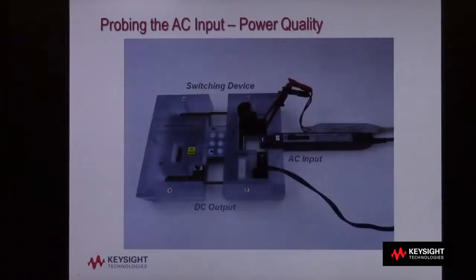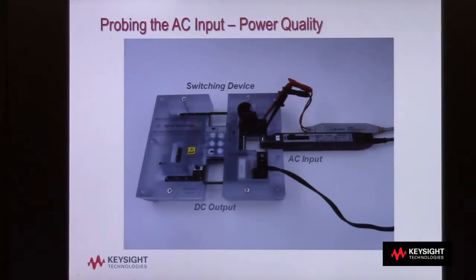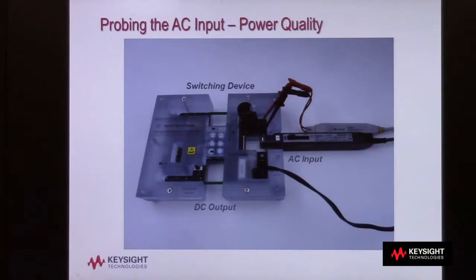For our demonstration, we'll be using Keysight's Switch Mode Power Supply Demo Board. This is the same DUT we use in many of our hands-on workshops around the world. The first task in making a power quality measurement is to probe the AC input with voltage and current probes. You'll typically need a high voltage differential probe and a clamp-on Hall Effect current probe. This particular power supply demo board has PCB current loop traces built in to make current probing easy.